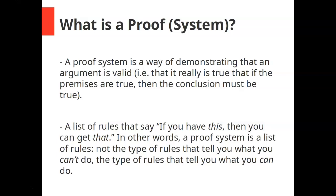Another way of thinking about a proof system is that it is a list of rules — not the type of rules that tell you what you can't do, but the type that tell you what you can do. So essentially, a proof system says if you have these types of sentences, you can get those types of sentences. By having that list of rules, you can prove that a certain argument form, or sequence as we'll come to call it, is valid.